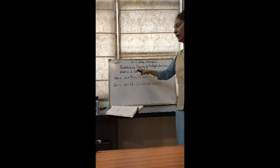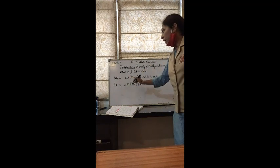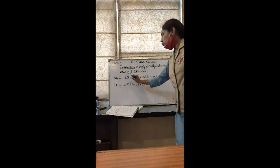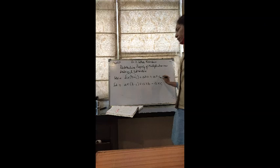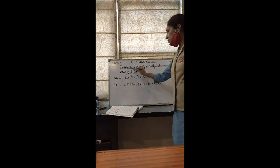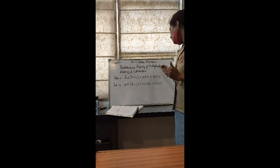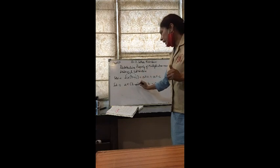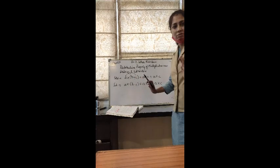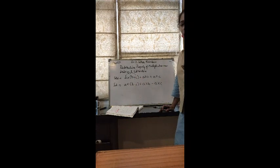Over addition, the format is: a into (b plus c) equals a into b plus a into c. And for subtraction, the format is: a into (b minus c). Distributive property means to distribute the number into two parts — multiplication over addition and multiplication over subtraction.